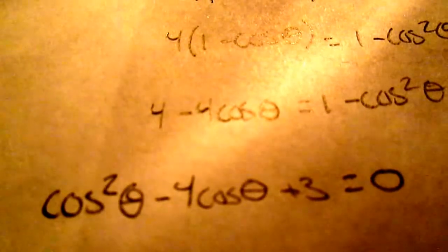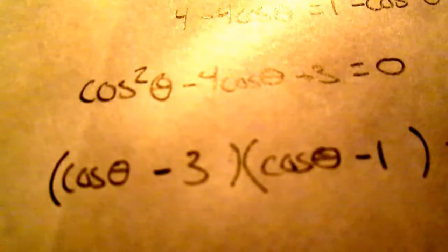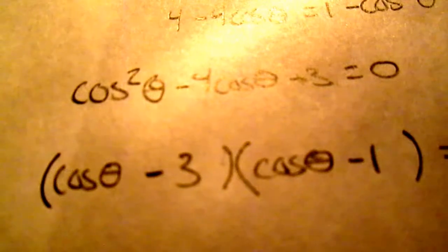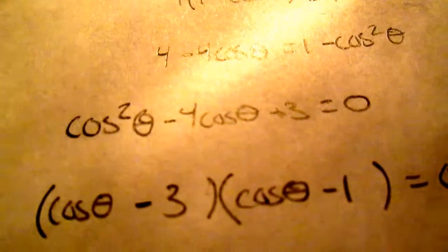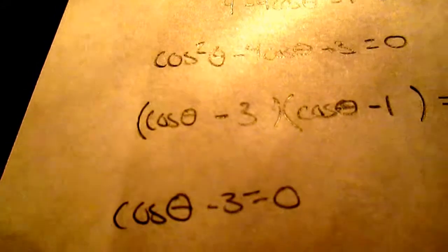And I just put it in order, cosine squared theta minus 4 cosine theta plus 3 equals 0. And that actually factors out real nice for us. Cosine theta minus 3 times cosine theta minus 1 equals 0.